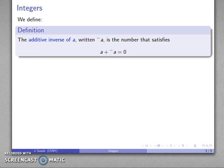So this allows us to define something new which is the additive inverse of a number. And so we'll define the additive inverse of a number a written this way is the number that satisfies the following equation: a plus the additive inverse is going to give you 0.